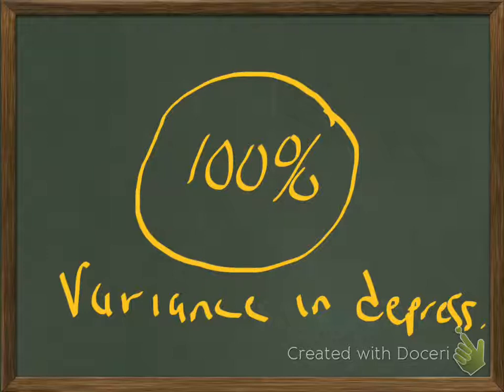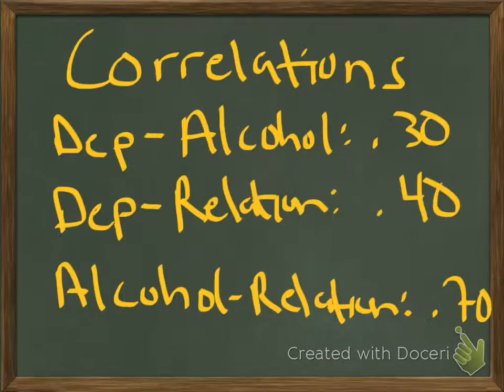All of these differences between individual scores and the average score are considered variability or variation. So we're trying to figure out what explains the variation. Another way to think about that is: what explains why one person might score a 3 on the depression scale and another person might score a 7? That difference is variation, and we're looking for things that predict it. That's what the independent variables are supposed to do — account for some of the variability in depression scores.